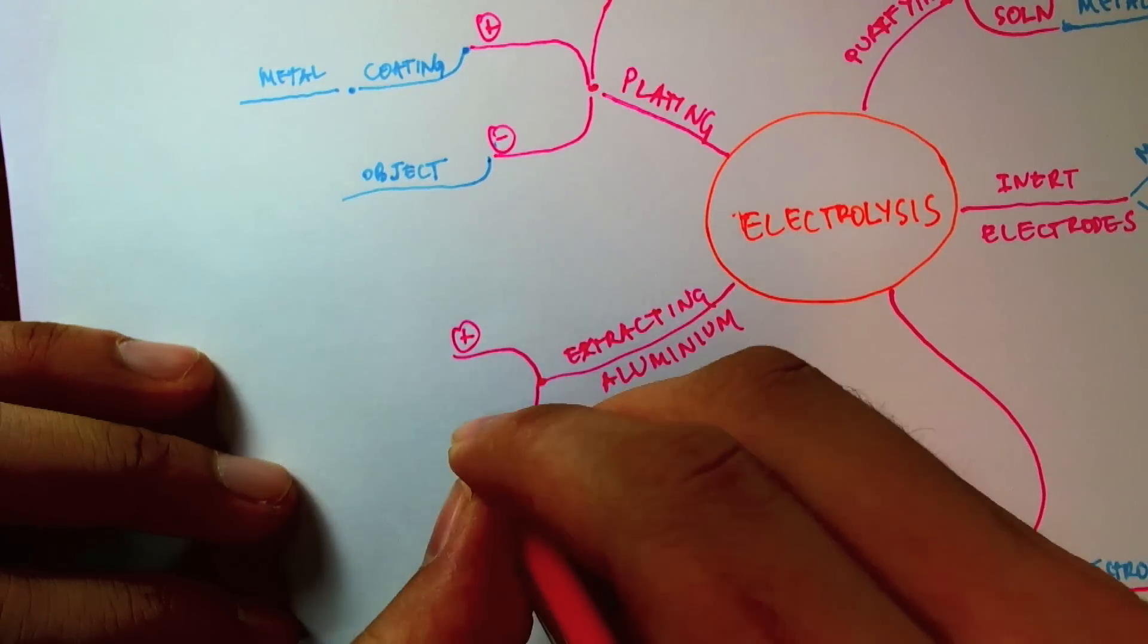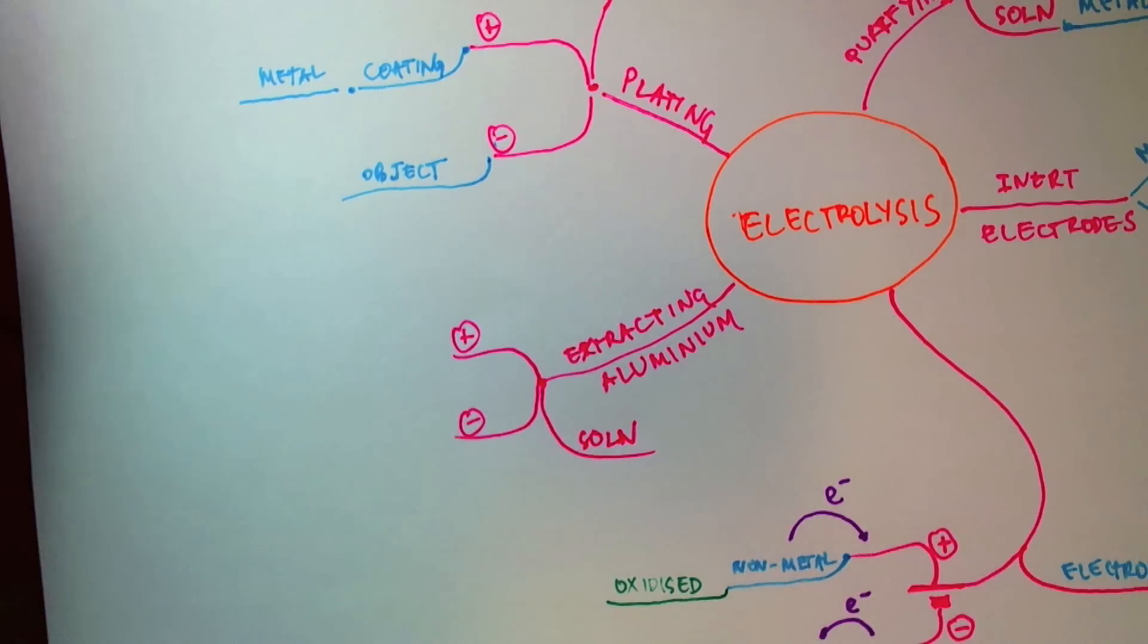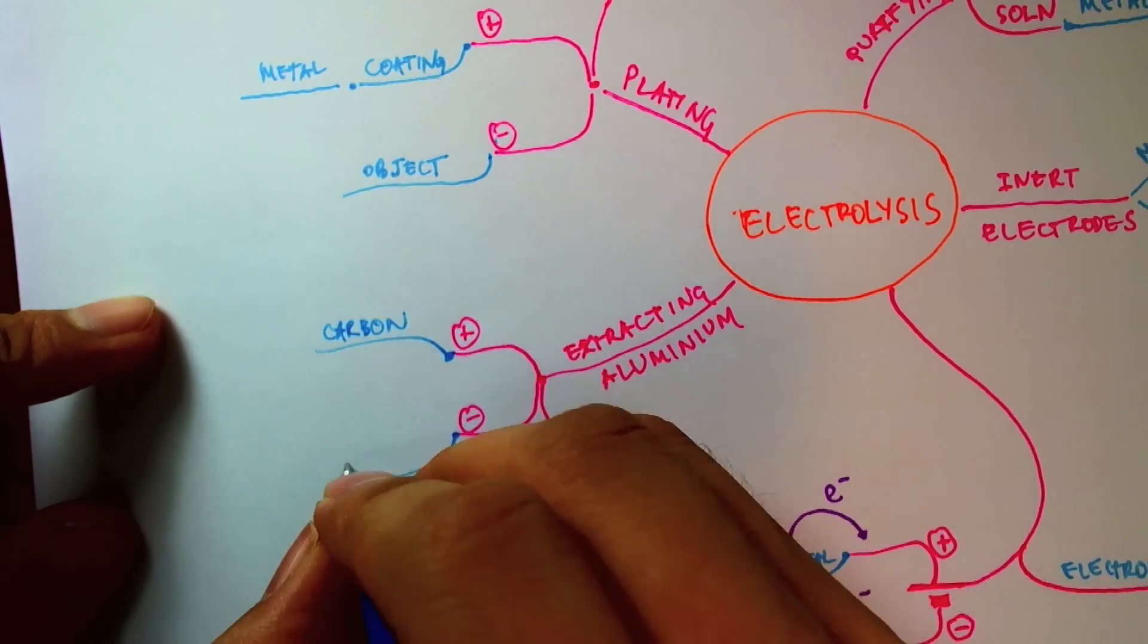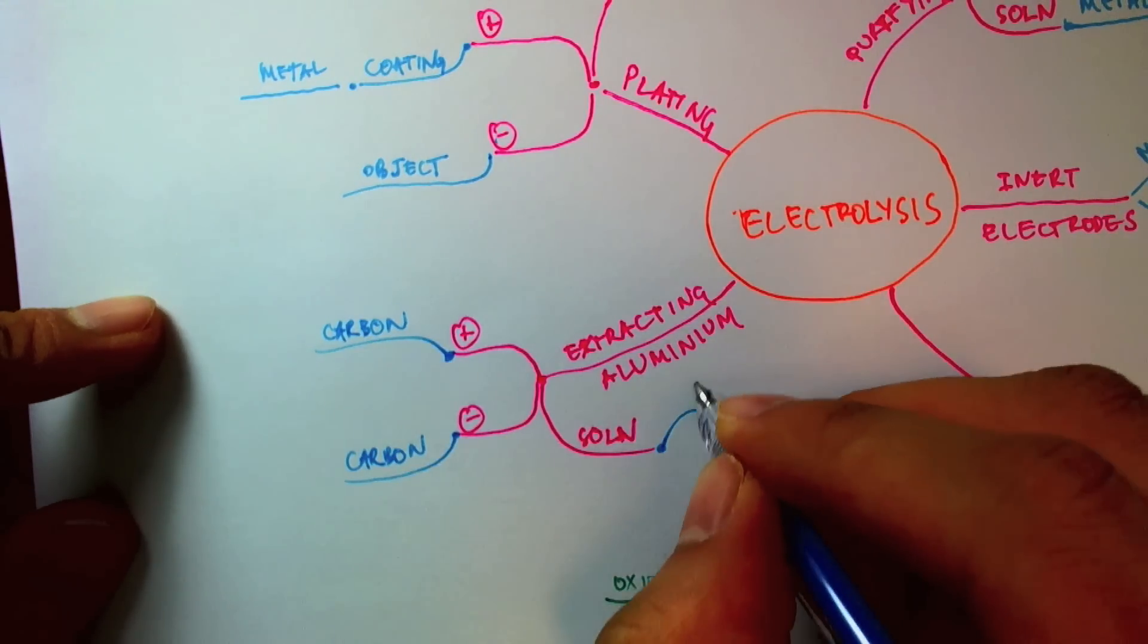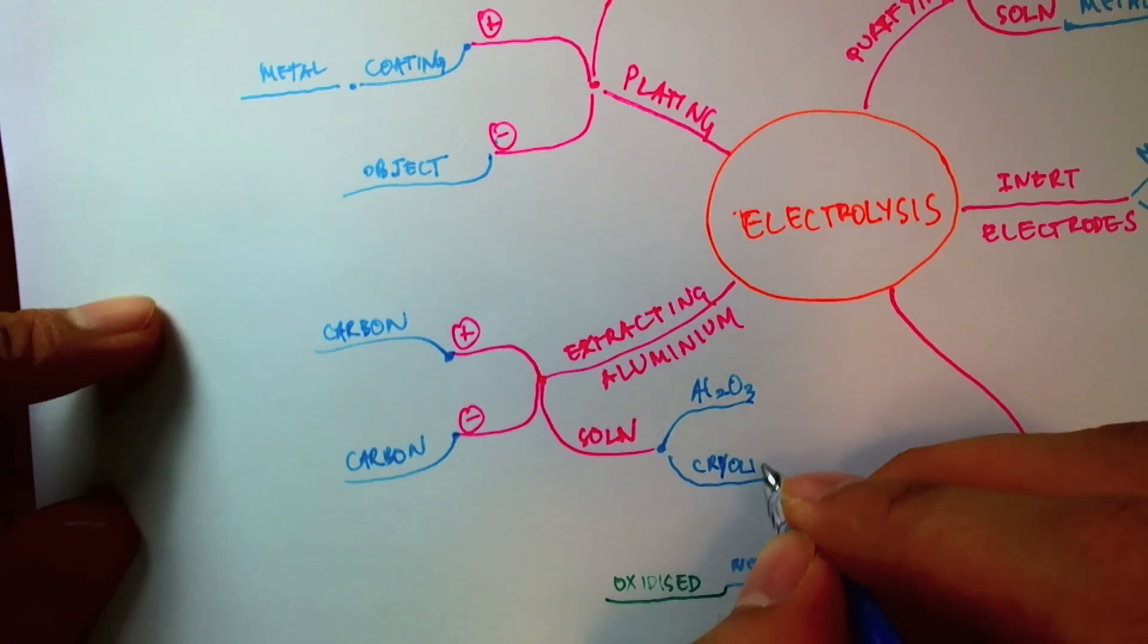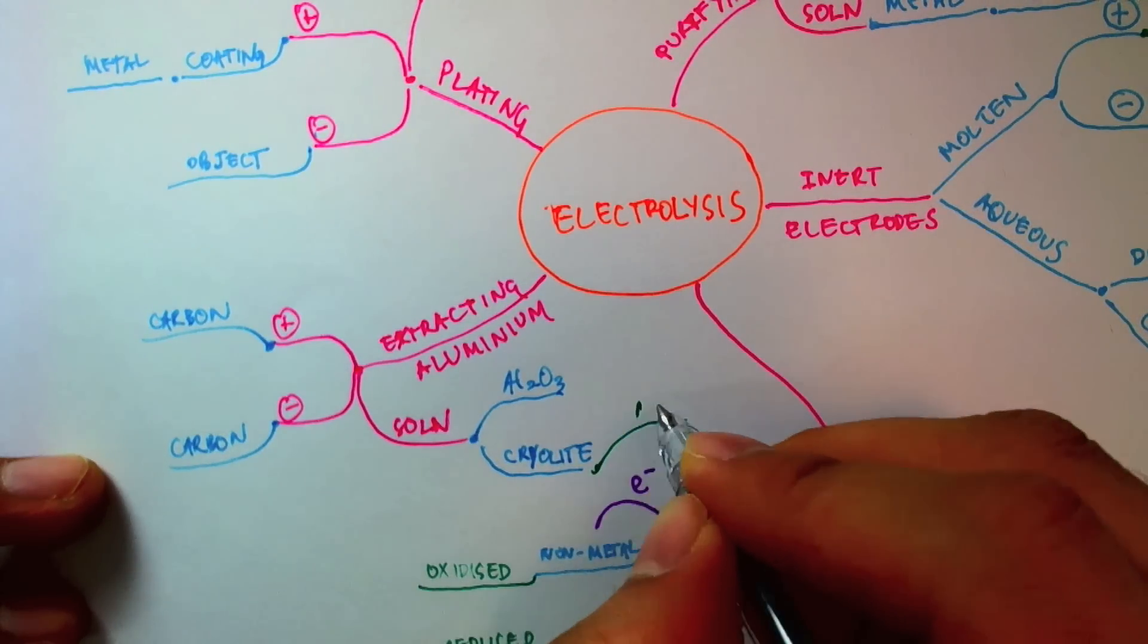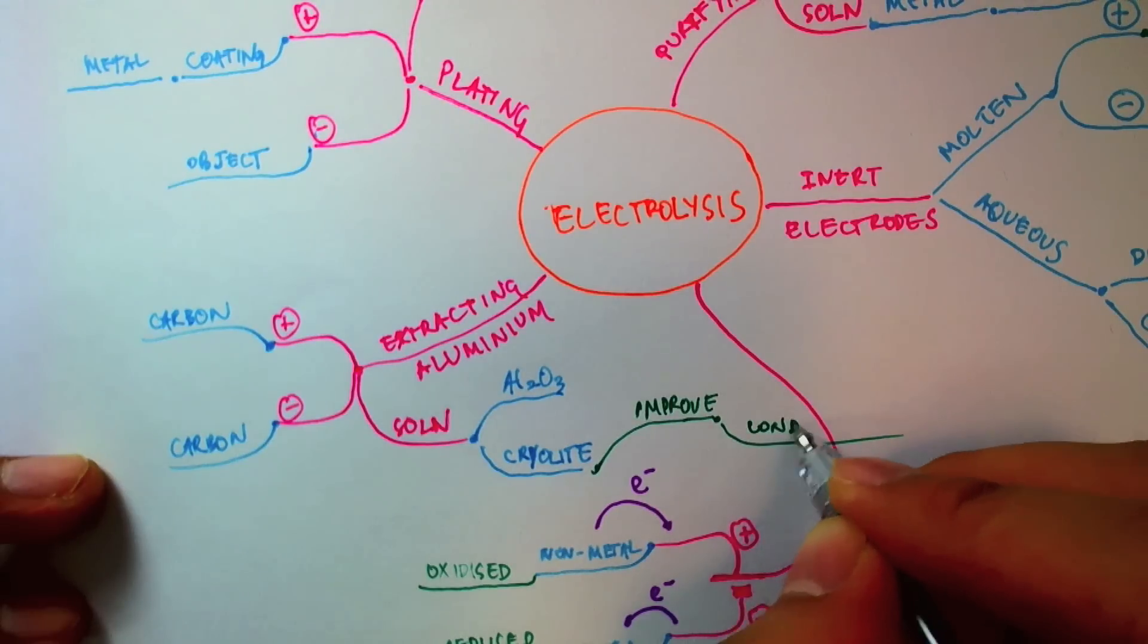So once again, anode, cathode, and our solution. So the anode was a carbon electrode. The cathode was also a carbon electrode. And in our solution, we had the bauxite. And in addition, we had used cryolite to lower the melting point and also to improve its electrical conductivity. So the cryolite is to improve conductivity.